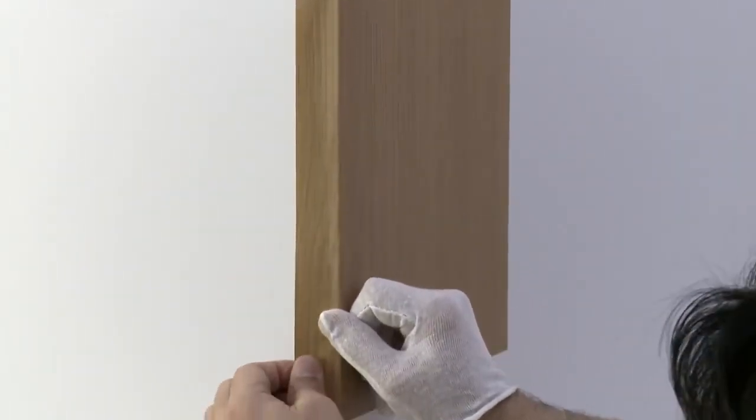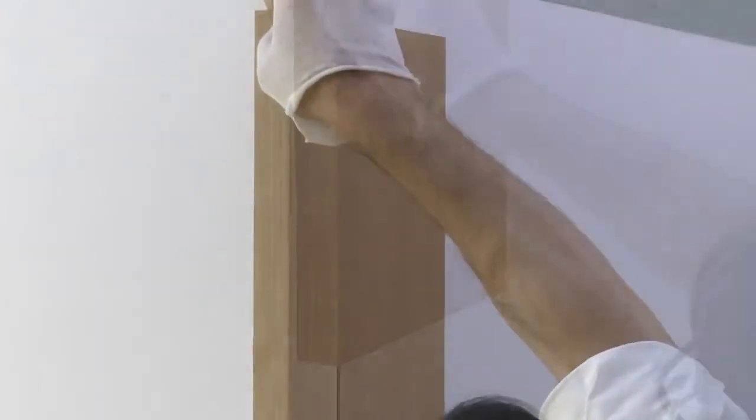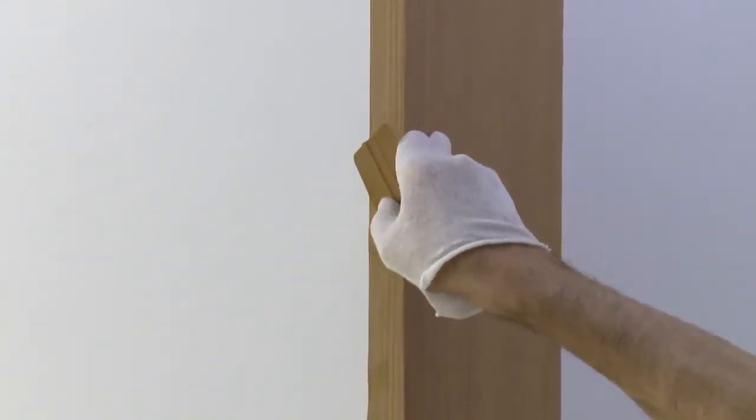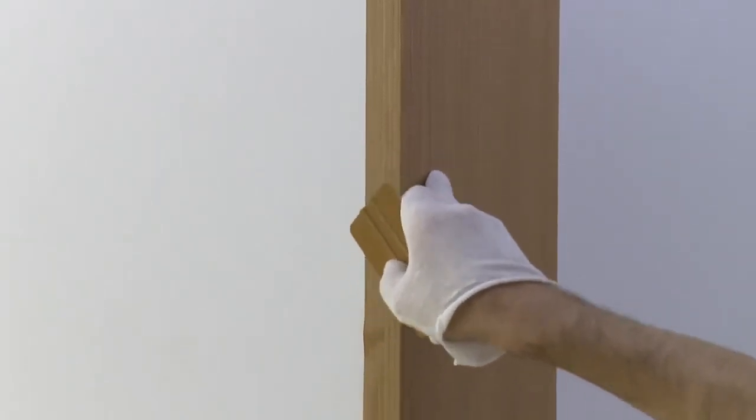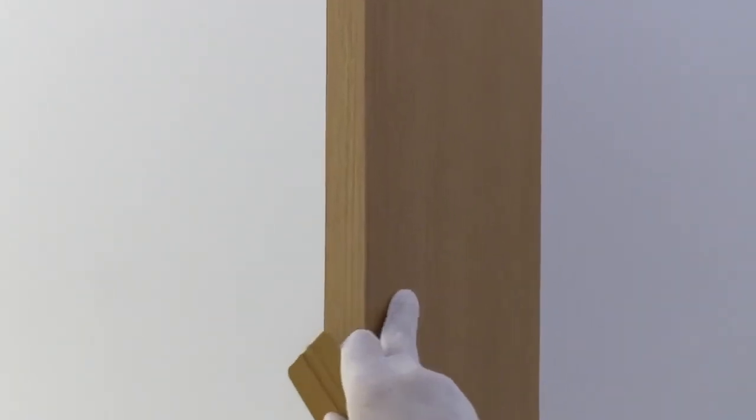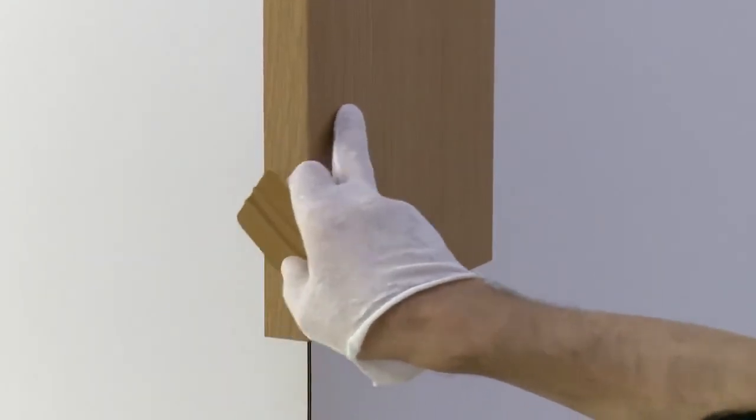When you have applied about 1 inch of film around the outside corner, use the squeegee to finish applying the film. Work from the corner, across the film, and onto the wall. Squeegee up and down the length of the film to ensure good and full adhesion.